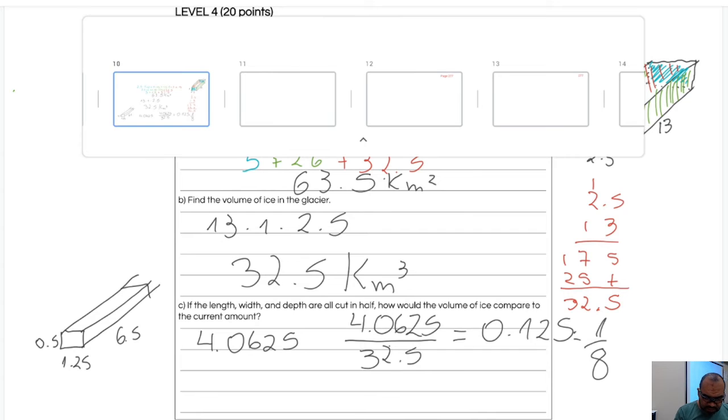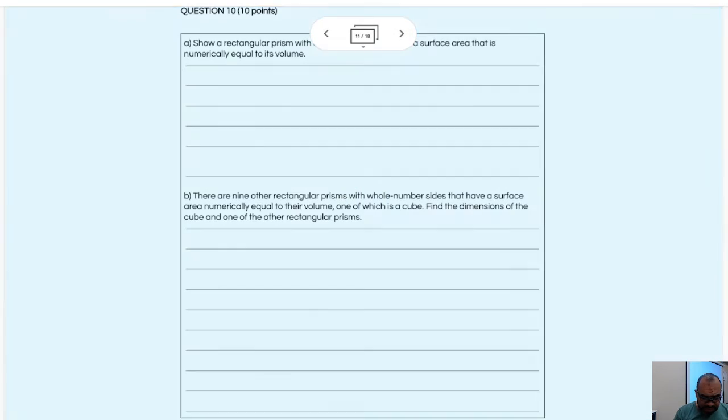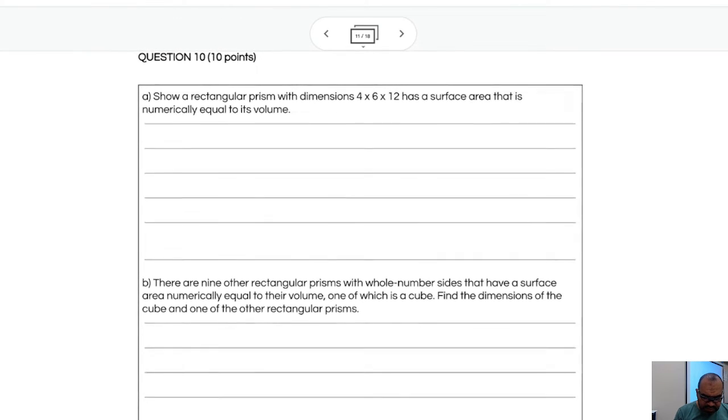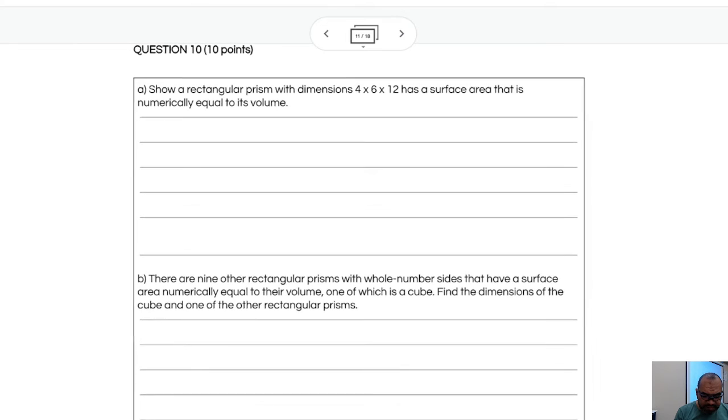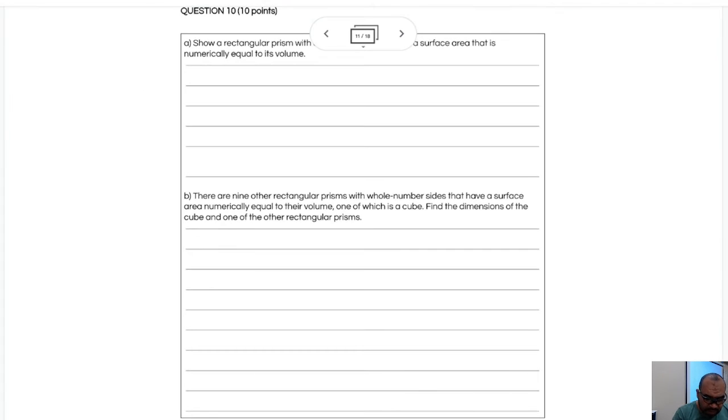Great. I think you understand this point here for this activity. Let's go ahead for the last one, question 11. In question 11, it is, show a rectangular prism with a surface area dimensions 4, 6, and 12 as a surface area that is numerically equal to its volume. Let's prove here. The volume, as you remember, it is length times width times height. And the surface area of a prism, rectangular prism, it is 2 times length width plus length height plus width height.